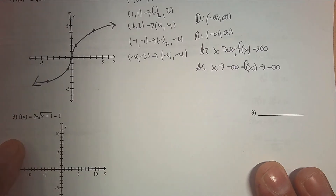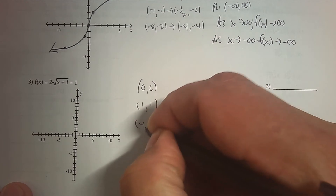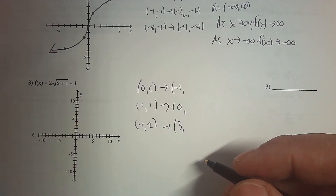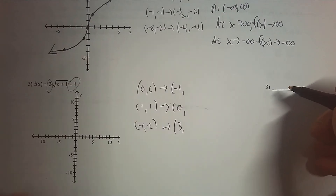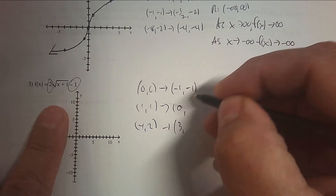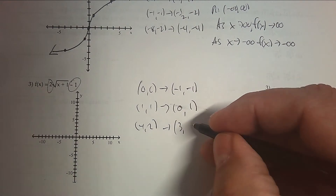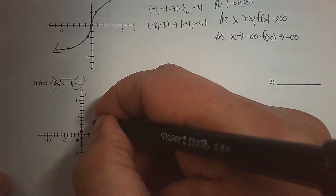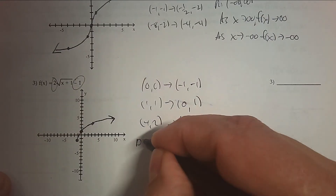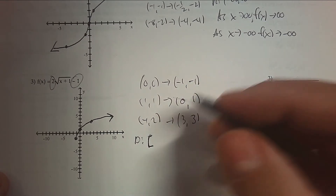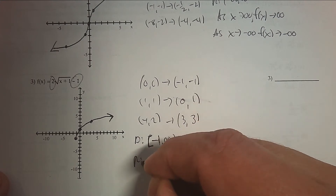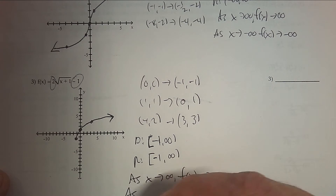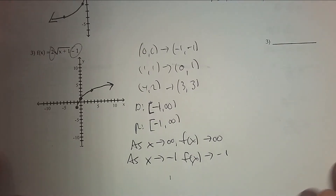Number 3: another square root to practice. We start with the parent points. Underneath, we're going to subtract 1 — we do the inverse of what's underneath the square root sign. Then for y, we're going to multiply by 2 and subtract 1. So: 0 times 2 subtract 1; 1 times 2 subtract 1; 2 times 2 is 4, subtract 1. Then we're going to plot those points.